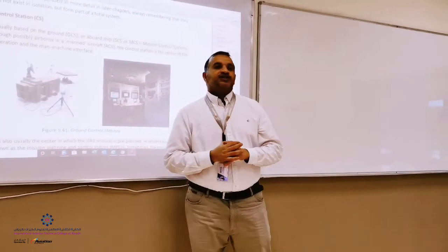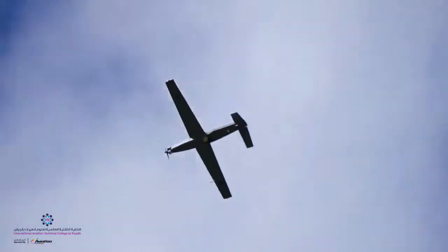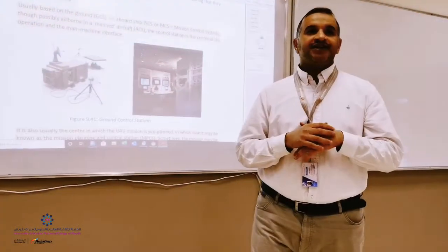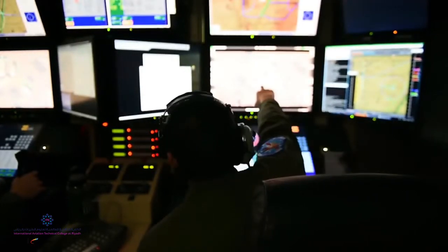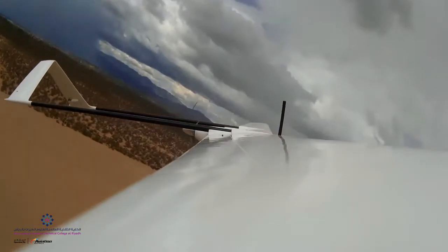Control stations can be airborne in manned aircraft, which is called ACS, operating the UAV from the manned aircraft aerial systems. Different sizes of the control stations depend on the UAV size and the mission of the UAV.